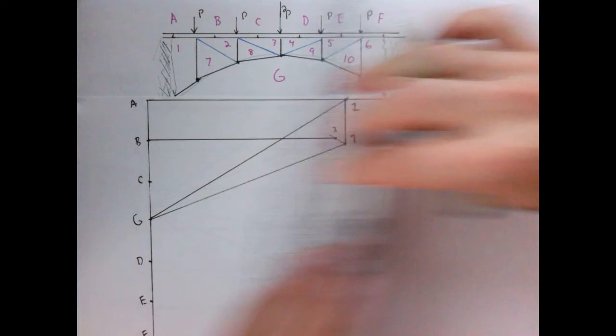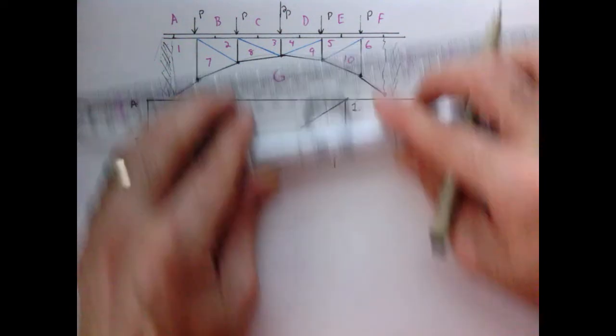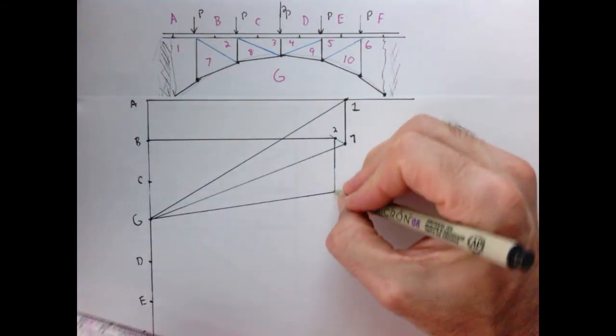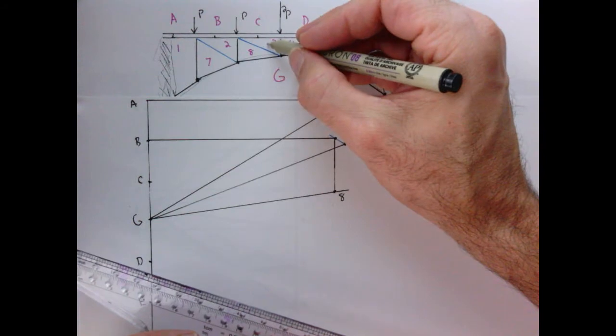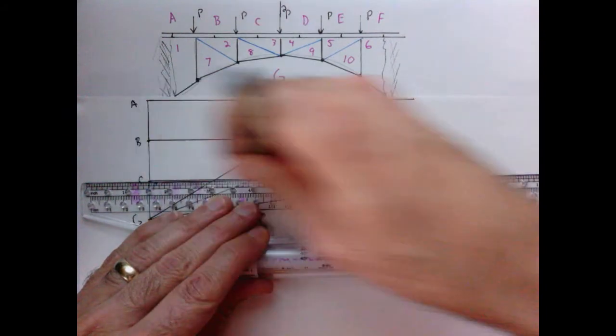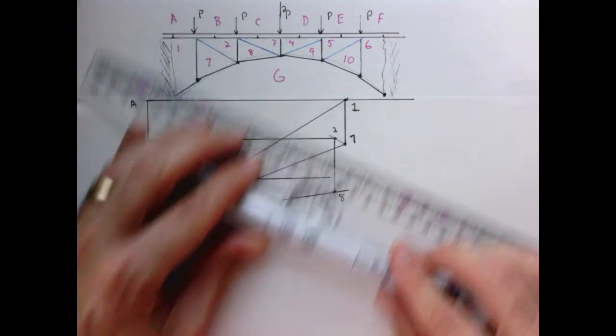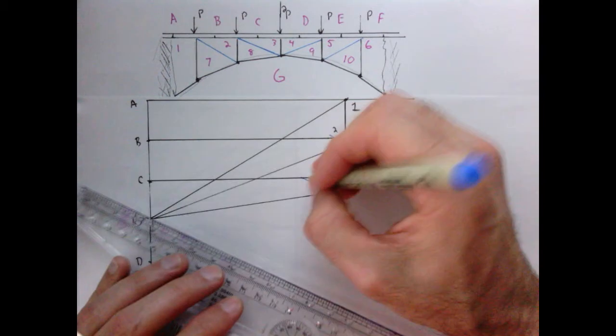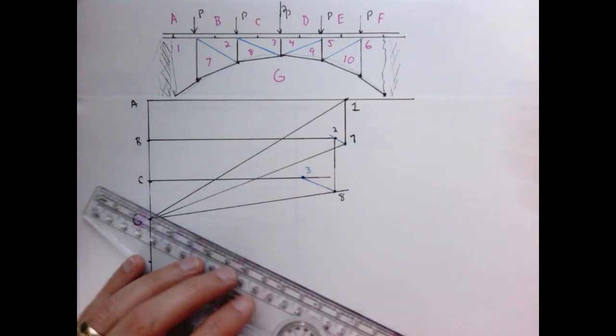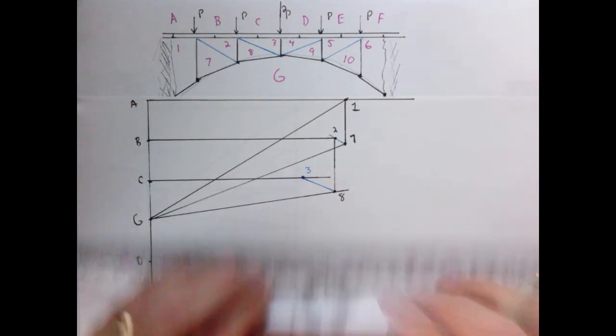2 connects to 8 through a vertical line. 8 is going to connect to G through this particular angle that we set here. Point 3 is connected to C through a horizontal line, and 8 and 3 connect through this blue support right here. And there's point 3. Now I think you kind of see the pattern here.